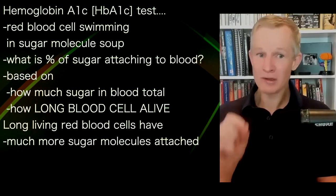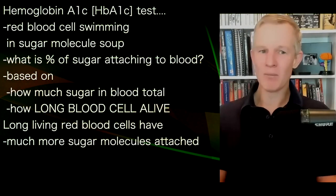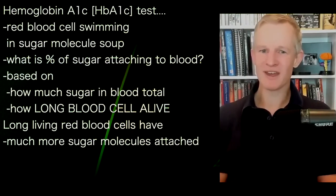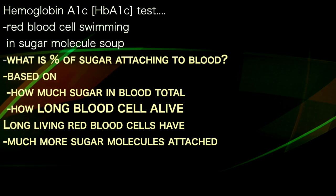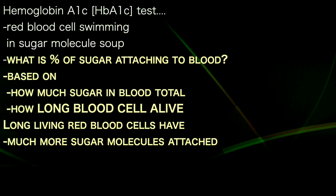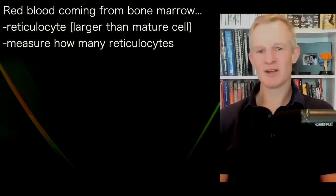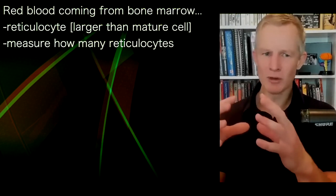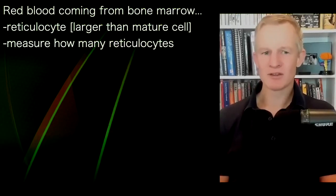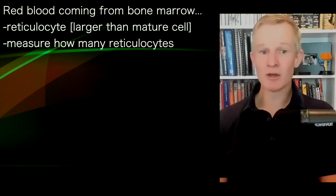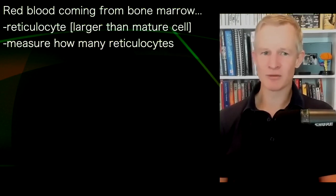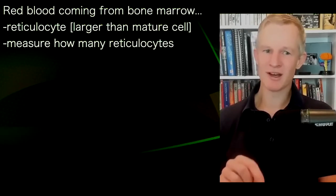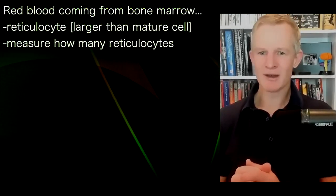If you had very long-lived red blood cells, they would have a lot more sugar attaching to them, and we can actually measure that in our clinic. When red blood cells come out of the bone marrow, they come out as a cell type called a reticulocyte — slightly bigger, containing a little RNA, and a different hue than mature adult red blood cells. We can measure the number of reticulocytes in someone's blood with a simple blood test.